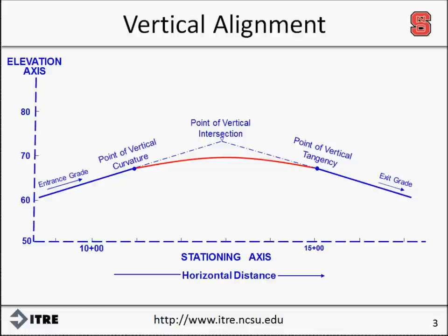The typical vertical curve is a symmetric parabolic curve whose shape is defined by the parabolic equation. The information required to fully define a vertical curve is the elevation of the beginning of the curve, the grades of the two tangents that are connected, and the length of the curve. The naming convention of vertical alignment is similar to horizontal alignment.